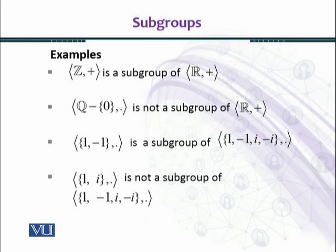If you multiply i with i, you get -1, which is not an element in the subset {1, i}.